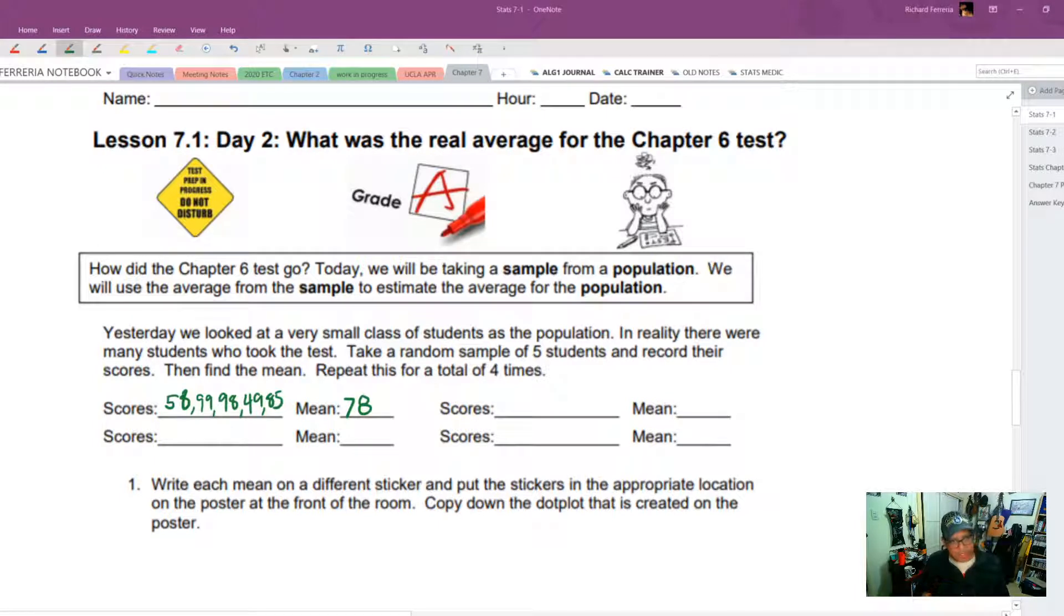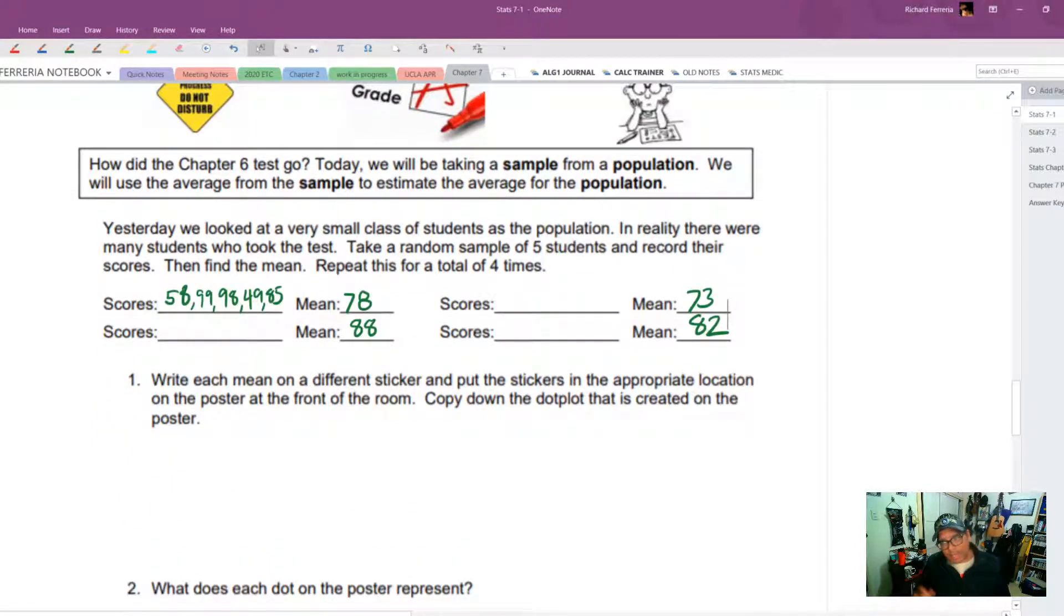So here are those four samples of five and their means. And then the next thing to do is, well, everybody in the class, and I think this class had 25 people in it, every person did four stickers. So eventually we got 100 stickers on a dot plot in the front of the room. Every sticker or every dot represented a different sample of five students. So let's get that dot plot copied here.